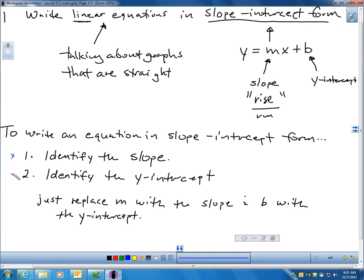And then the second thing is to identify the Y-intercept. And then once you identify the numerical slope and what that numerical Y-intercept is, you can just go to M and B in your equation and replace M and B with those individual values for slope and Y-intercept, and you have the equation written.